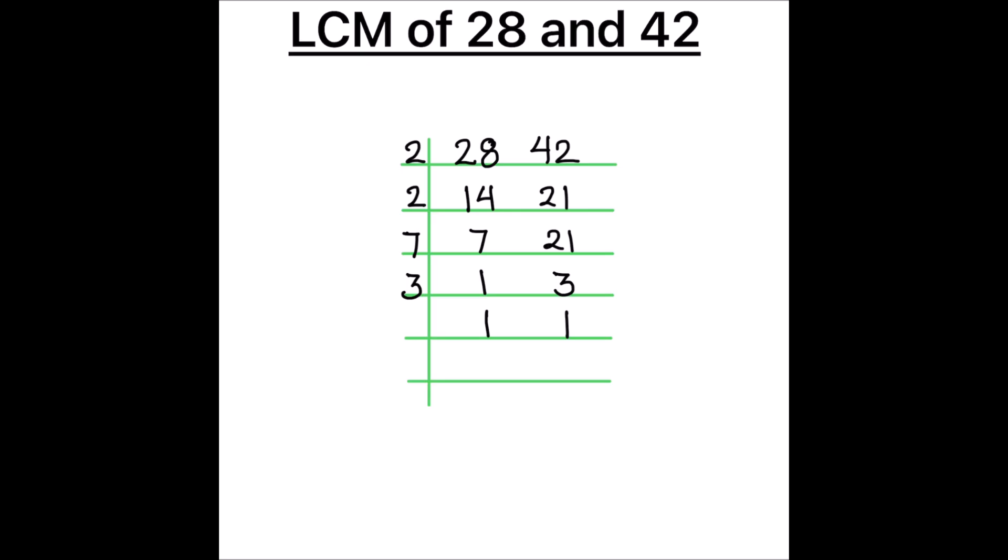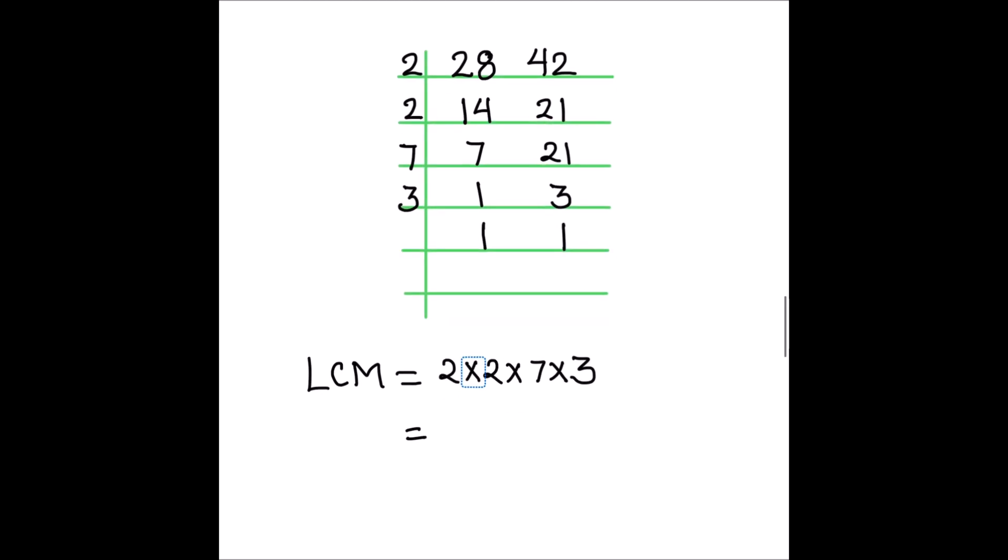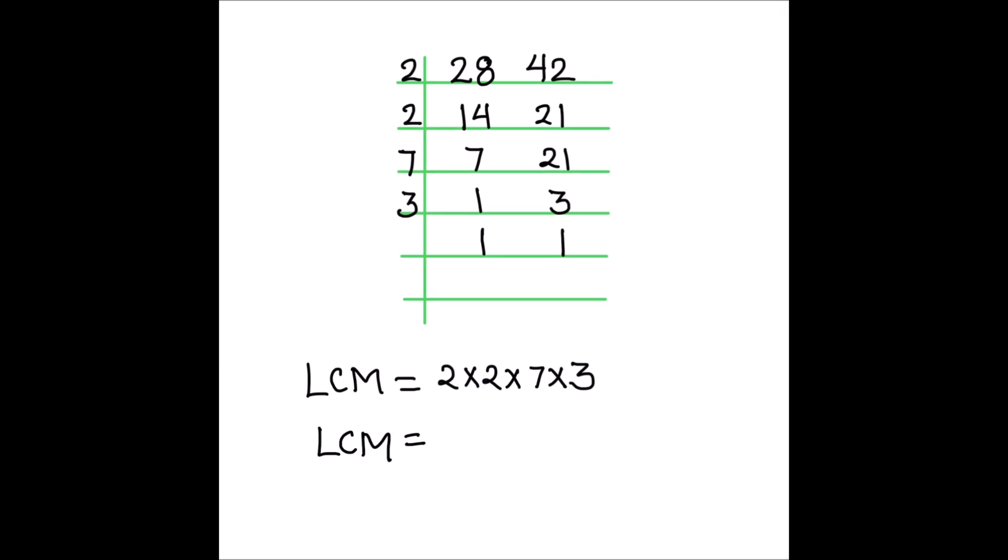To find the LCM of the 2 numbers we are going to write the product of all the factors which are on the left hand side of the ladder. So LCM will be 2 times 2 times 7 times 3 which equals 2 times 2 is 4, 4 times 3 is 12 and 12 times 7 is 84.